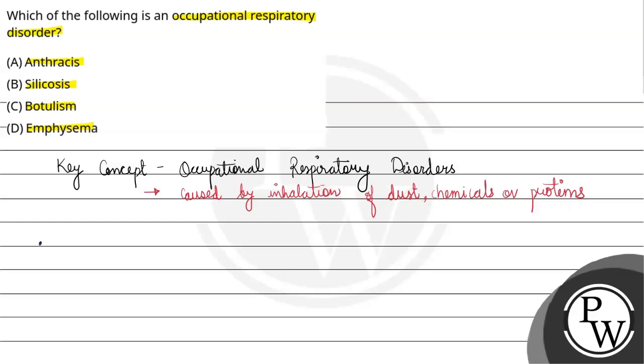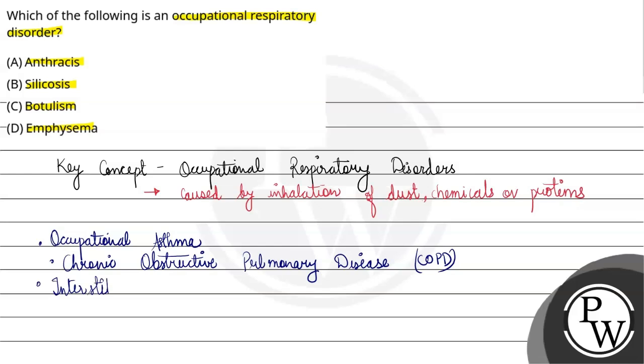Ab agar hain examples dekhe hain, occupational respiratory disorders. Toh isme kya kya hoga? It will include occupational asthma, second chronic obstructive pulmonary disease, as we call it COPD. Next is interstitial lung diseases or silicosis. So, ab agar hain options dekhe hain.